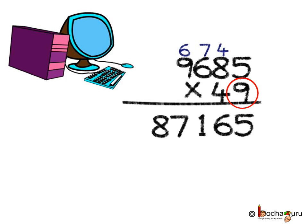We start with 9, so 9,685 multiplied by 9. 9 fives are 45 — write down 5 and 4 is the carry forward. Next, 9 eights are 72; add carry over 4, so we get 76. Next, 9 sixes are 54; add carry over 7, we get 61 — carry forward is 6. Next, 9 nines are 81; add carry over 6 — 81 plus 6 is 87.